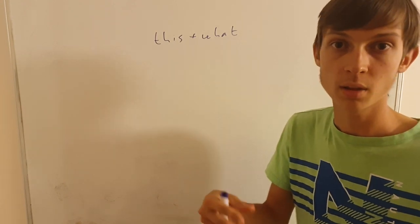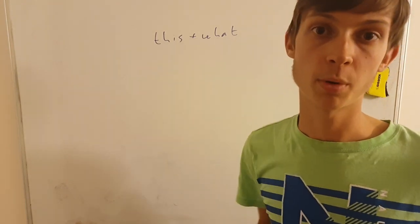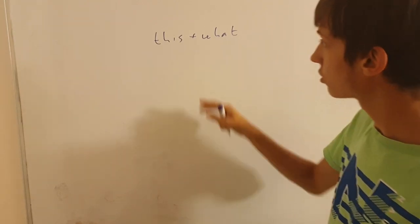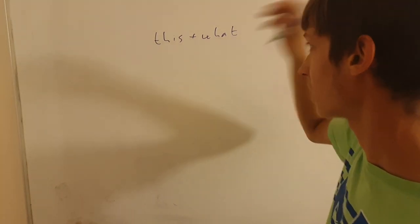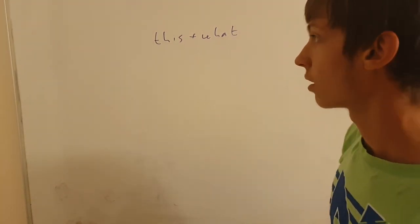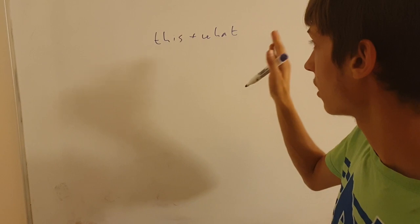You don't need to use the connecting word be with it for a person singular form is. So just say this plus what, without the plus of course, and that means like asking what is this.